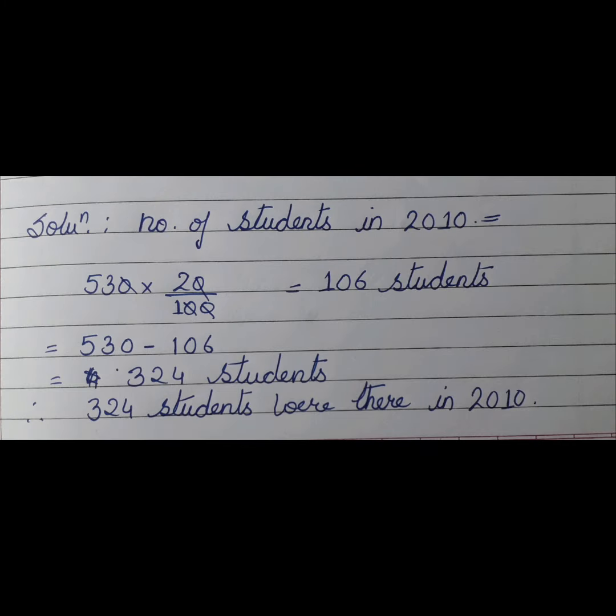Let's see the solution. We will first find out the number of students in 2010. We will calculate the percentage given in 2011, so 20 percent of 530 will be 106 students. We will subtract this 106 from 530.